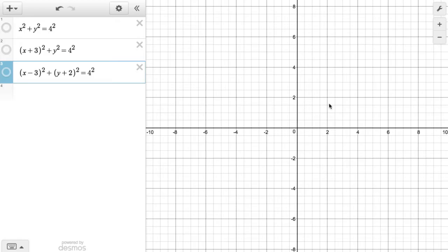Looking at this Cartesian plane here, what I want to do is draw a circle which is centered at the origin and has a radius of four. If I turn on this first equation, we can see that x squared plus y squared equals four squared. We have a circle here with a radius of four.